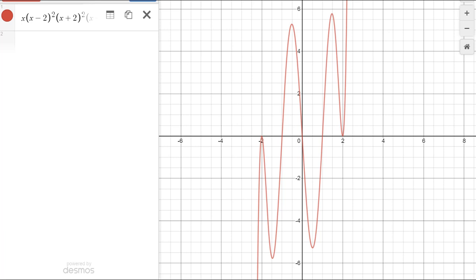So here we are at desmos.com and I actually plotted this really crazy looking function. So here's the whole function. It's x times x minus 2 squared, x plus 2 squared, x minus 1 and then x plus 1. So here's kind of the idea behind this. What if I asked you to evaluate this for, let's say, how about 1.3?